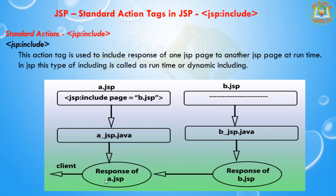Another difference: for the directive include, the attribute is 'file', but for the action include, the attribute is 'page'. So in the directive tag the attribute is 'file', and in the action include tag the attribute is called 'page'.